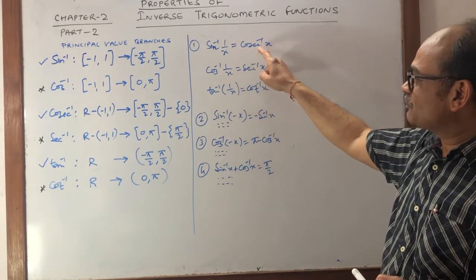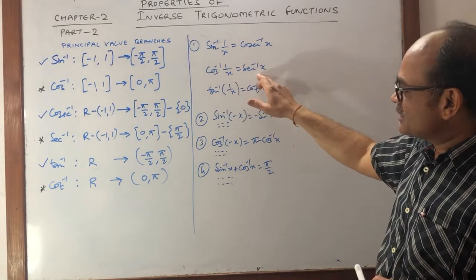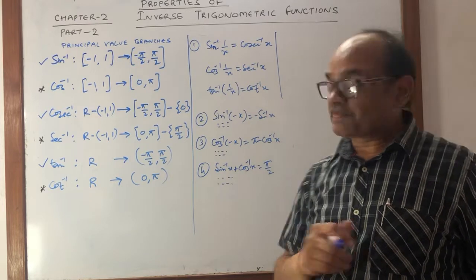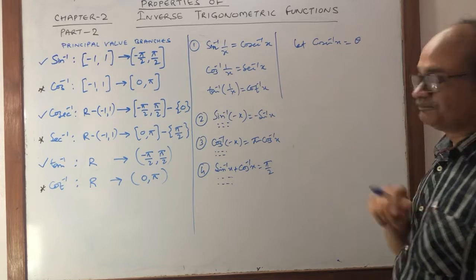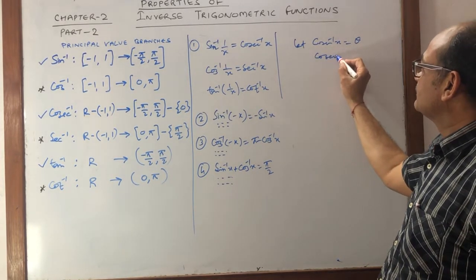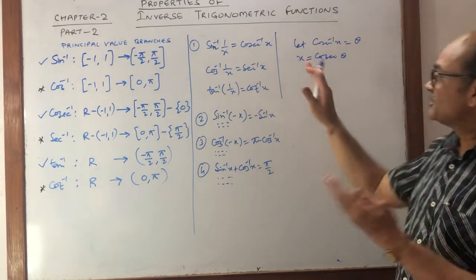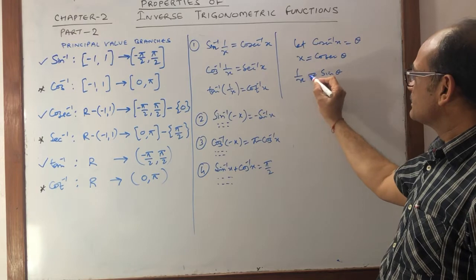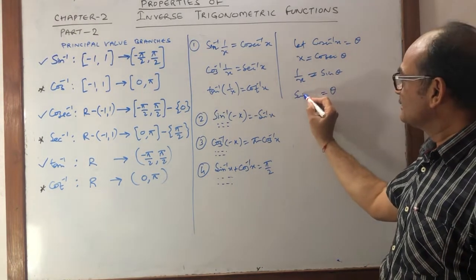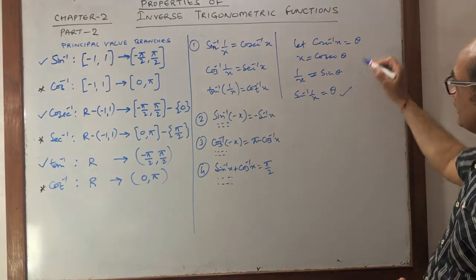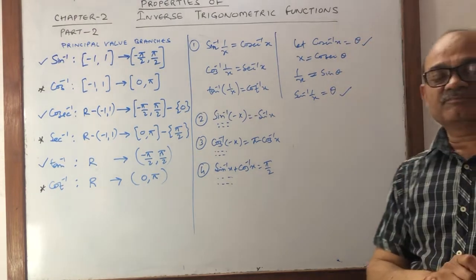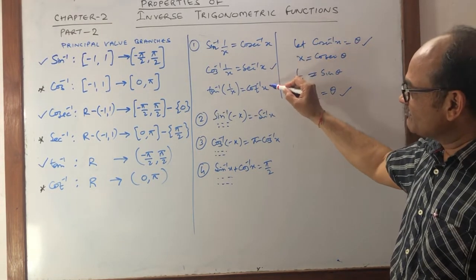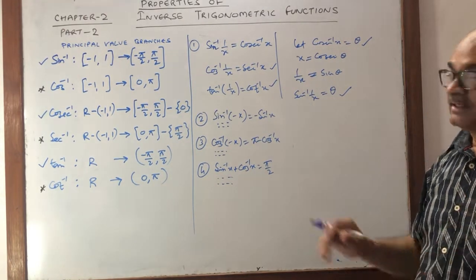Property 1: sin⁻¹(1/x) = csc⁻¹(x), and similarly csc⁻¹ relates to sec⁻¹, and tan⁻¹(1/x) to cot⁻¹(x). To prove this, suppose csc⁻¹(x) = θ, then csc θ = x. We can write 1/x = sin θ, so θ = sin⁻¹(1/x). Hence csc⁻¹(x) = sin⁻¹(1/x), or vice versa. We can prove similarly for the others. These properties are only valid in principal value branches.